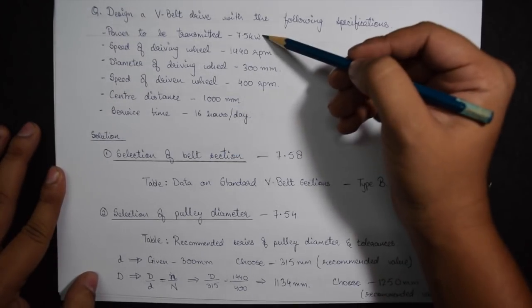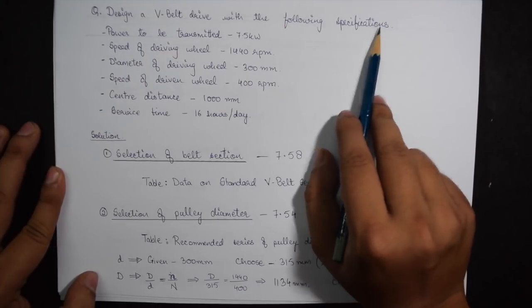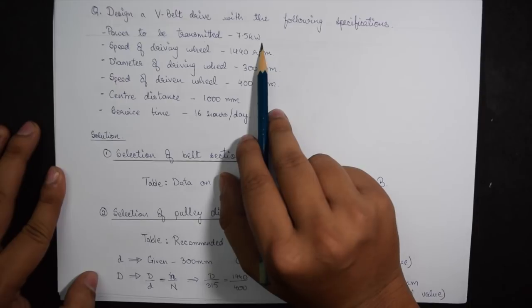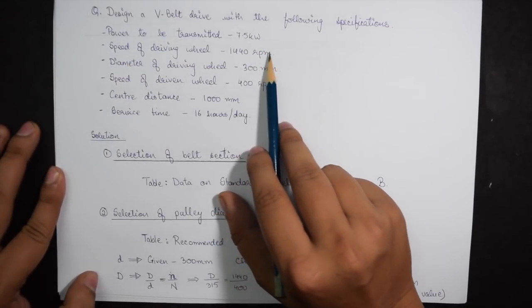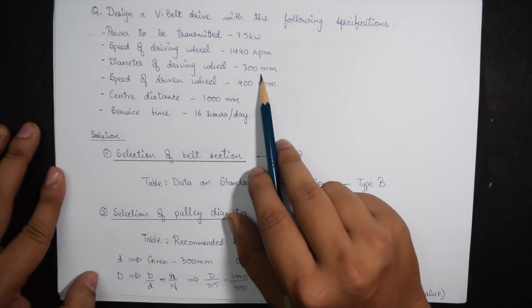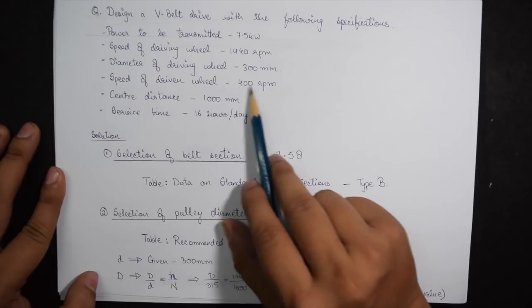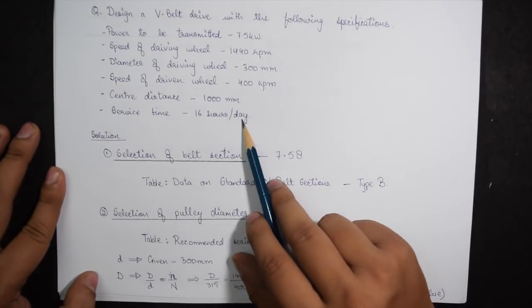Reading the question we see, we need to design a V-Belts drive with the following specifications: Power to be transmitted is 7.5 kilowatts, speed of driving wheel is 1440 rpm, diameter of driving wheel is 300 rpm, speed of driven wheel is 400 rpm, center distance 1000 mm, service time is 16 hours per day.